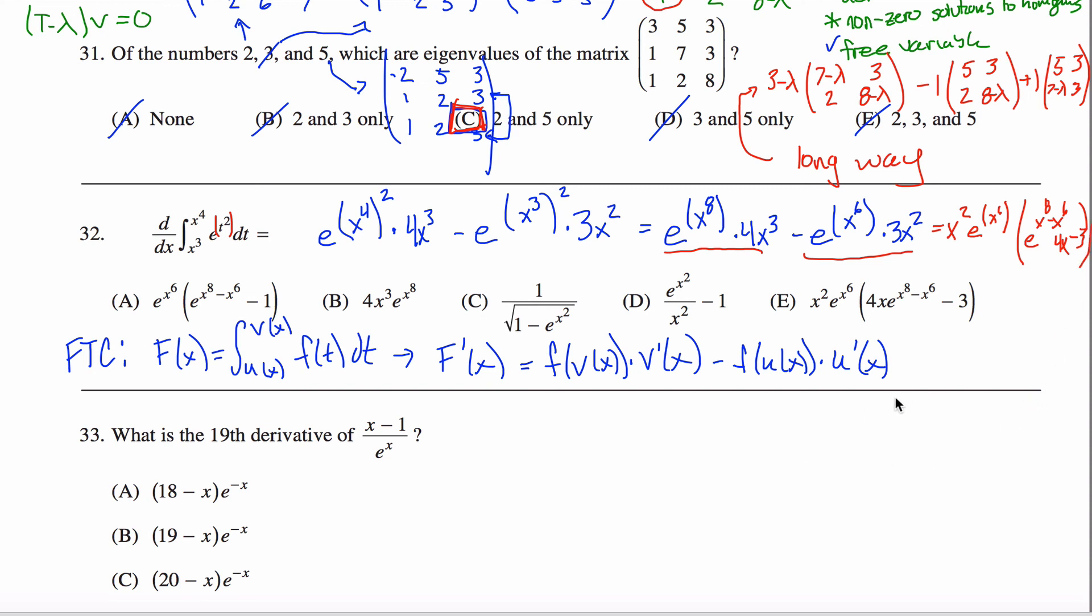It doesn't fit in there very well. Maybe I can try that one more time. Hopefully, that looks exactly like this. Let's see, I got X squared, cool. E to the X to the 6th, yup, those don't have the unnecessary parentheses. 4XE, so here's the 4X, here's the E raised up to the X to the 8th minus X to the 6th, then the minus 3. Looks a lot like answer E here. So, that would be the answer to this question.